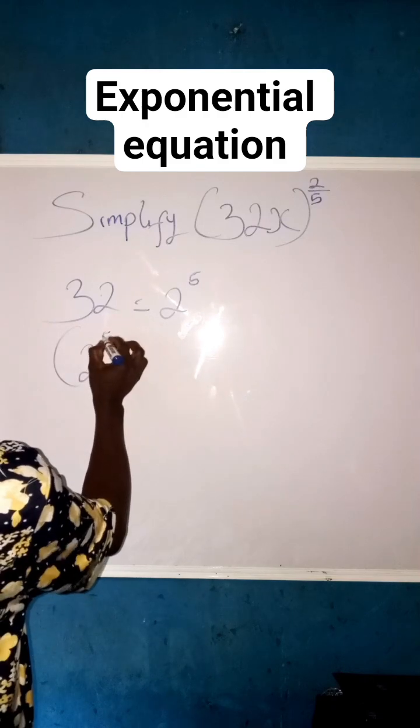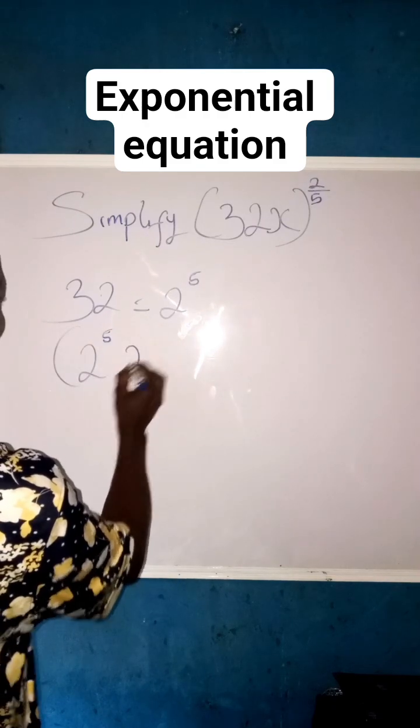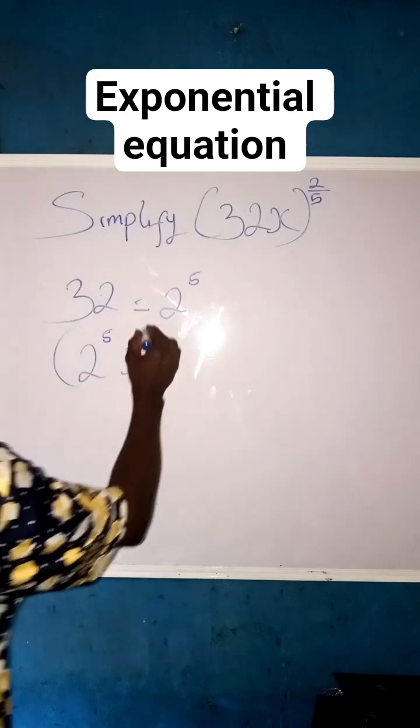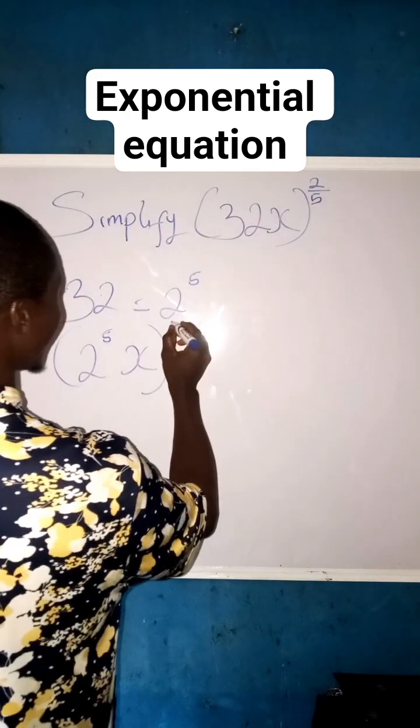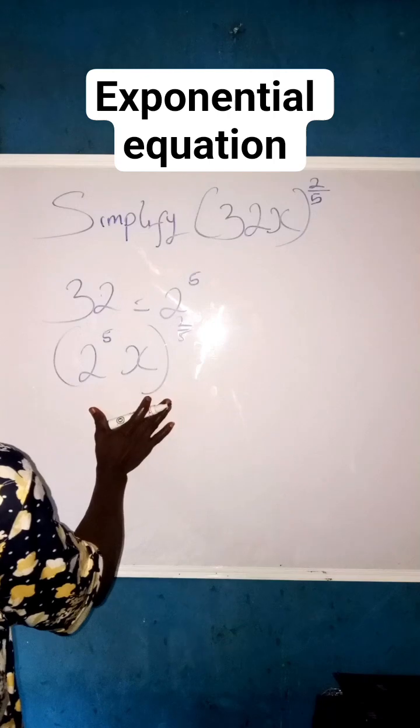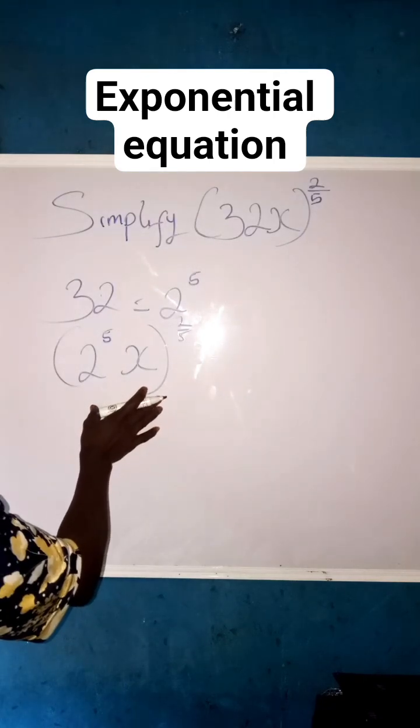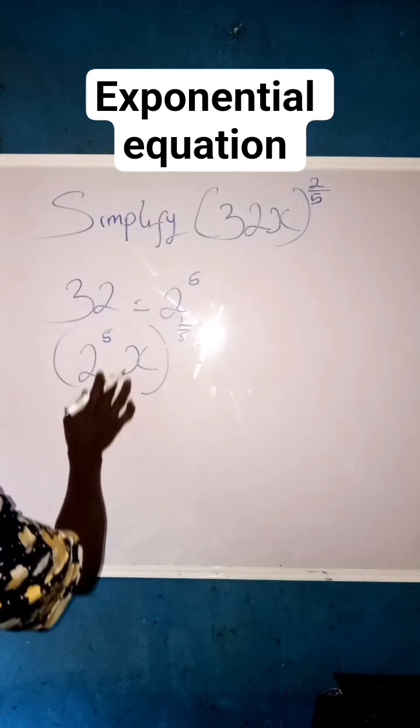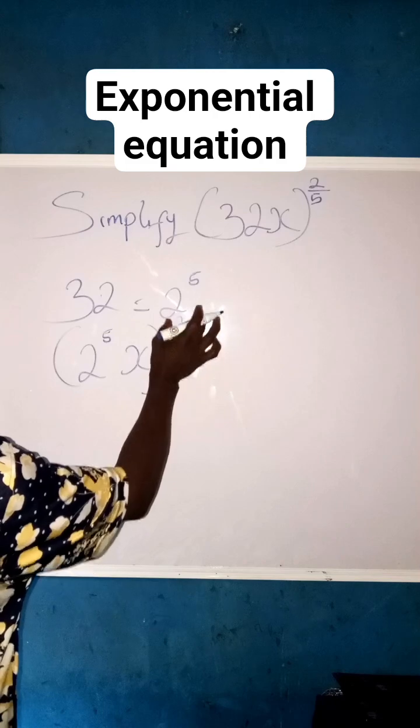You can have 2 raised to power 5, then x, then all in brackets, then raised to power 2 all over 5. So this now, we can also make it to become, because this 2 raised to power 5, we receive from this power 2 raised to power 5.